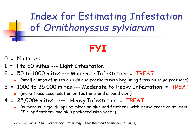We have here an index for estimating the infestation of Ornithonyssus sylviarum. An index of zero means there are no mites on the bird. An index of 1 means 1 to 50 mites are present, indicating a light infestation. An index of 2 means 50 to 1,000 mites, indicating a moderate infestation. An index of 3 means 1,000 to 25,000 mites, that is a moderate or heavy infestation. An index of 4, the highest, means 25,000 or more mites, considered a heavy infestation. Indices 2, 3, and 4 require treatment.